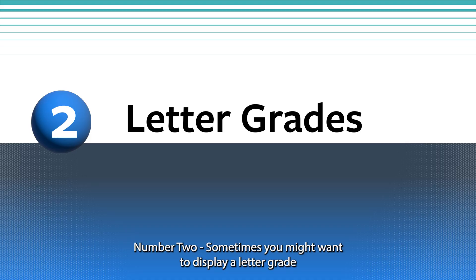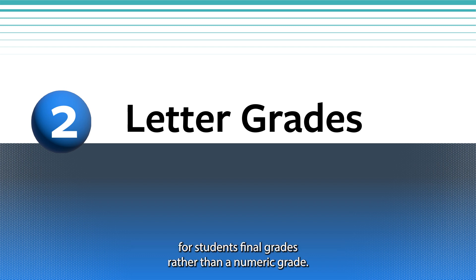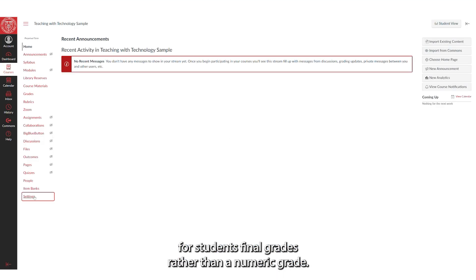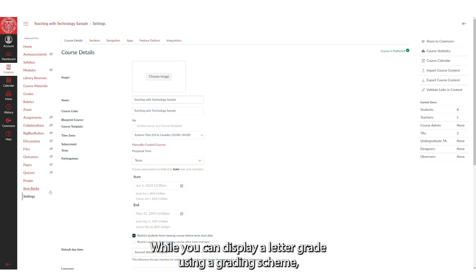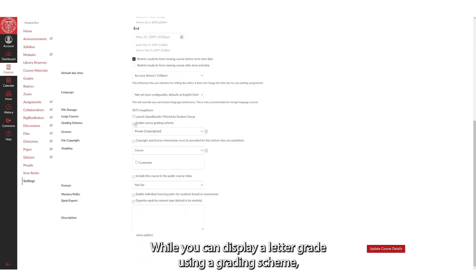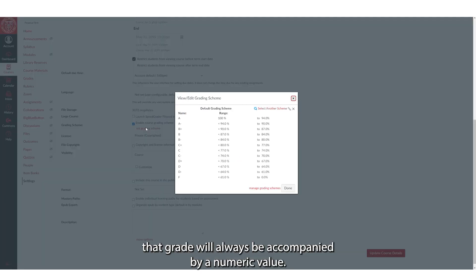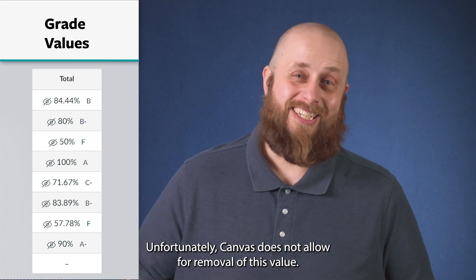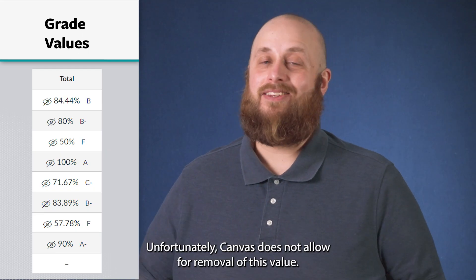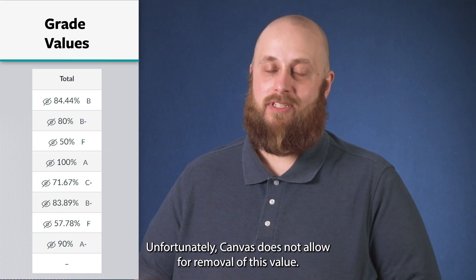Number two: sometimes you might want to display a letter grade for students' final grades rather than a numeric grade. While you can display a letter grade using a grading scheme, that grade will always be accompanied by a numeric value. Unfortunately, Canvas does not allow for the removal of this value.